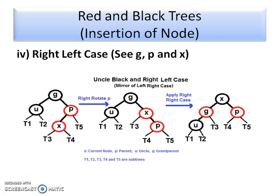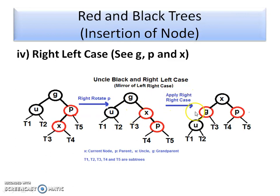The right-left case is the mirror of the left-right case. The grandparent's right child is the parent and the parent's left child is X. We first perform a single right rotation (RR rotation) — X takes the position of P and P becomes the right child of X. Then we apply the right-right case, performing a left rotation (LL rotation). Together this is an RL rotation, resulting in a balanced Red-Black tree.